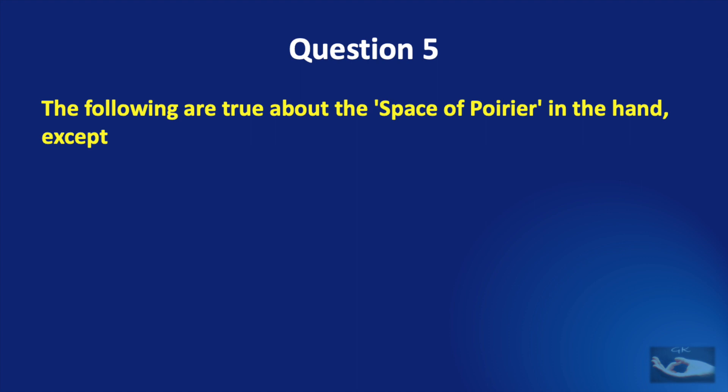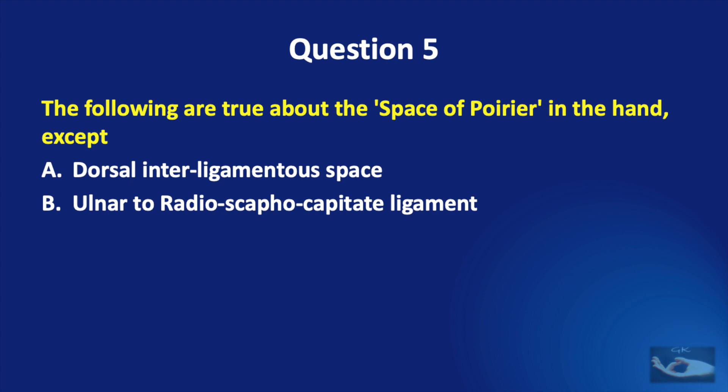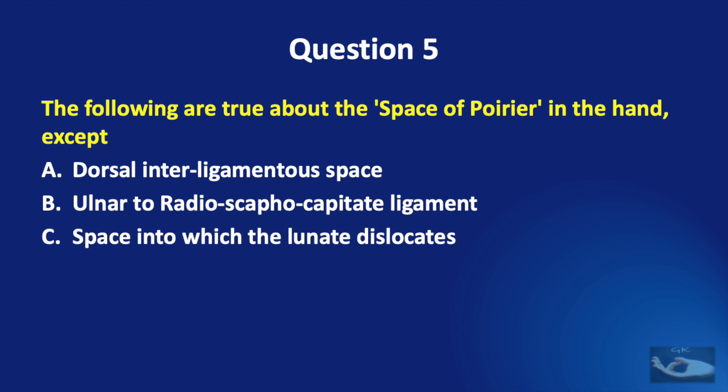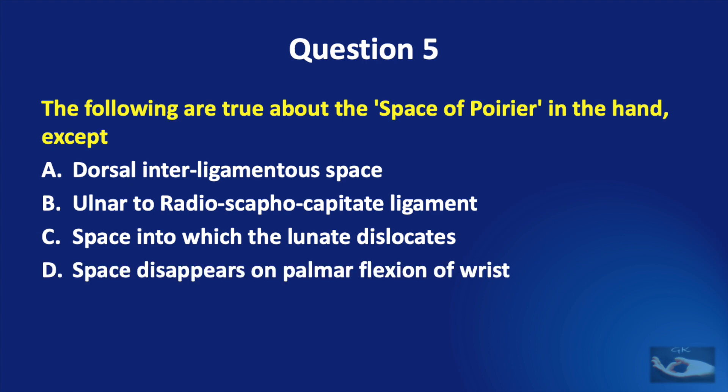Question number 5. The following are true about the space of Poirier in the hand, except: it is a dorsal interligamentous space; it lies ulnar to the radioscaphocapitate ligament; it is the space into which the lunate dislocates; or the space disappears on palmar flexion of the wrist?